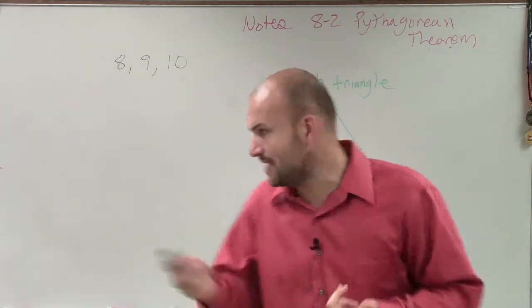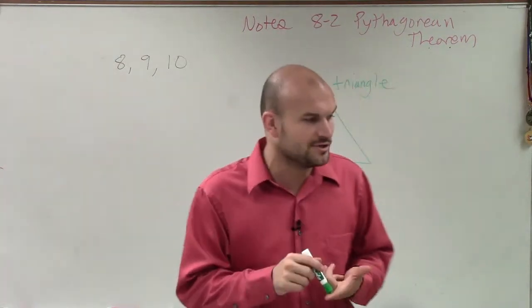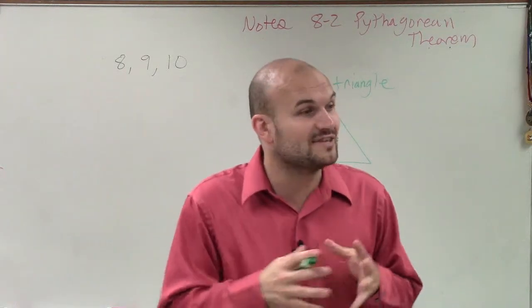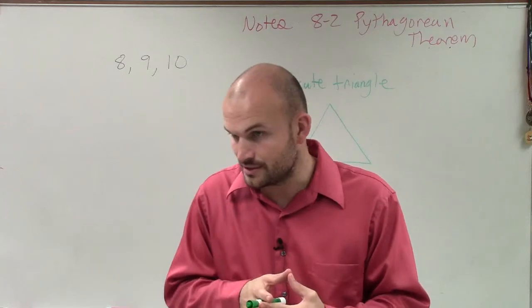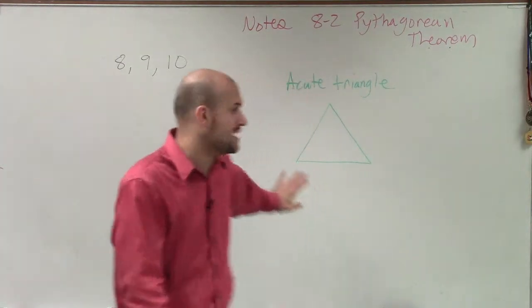But the problem is a right triangle has an acute angle, right? And even an obtuse is going to have an acute. So an acute triangle, we're talking about acute triangle, that means every single angle is going to be acute. Every single angle is going to be less than 90 degrees. So that's an acute triangle.